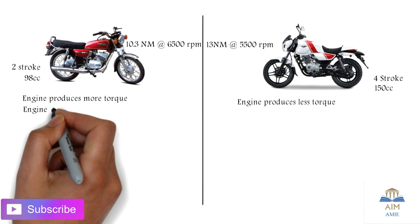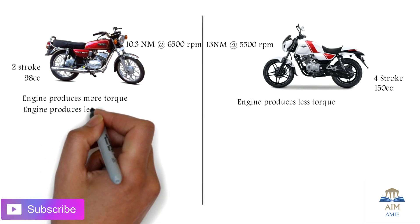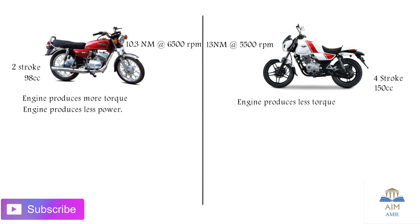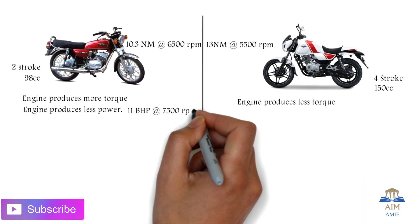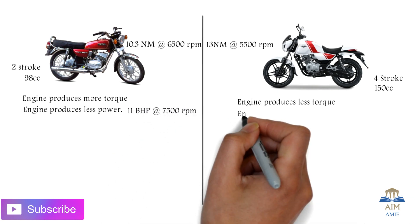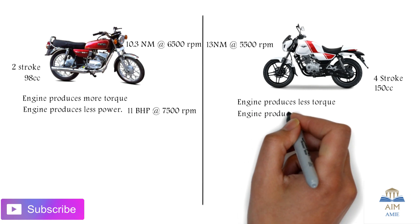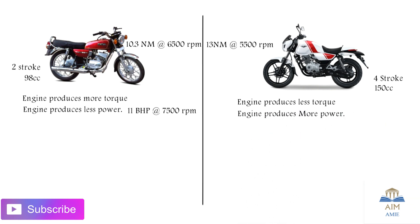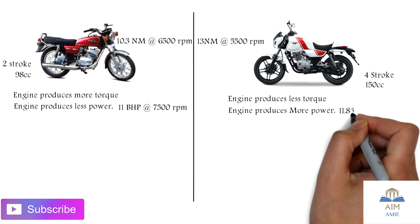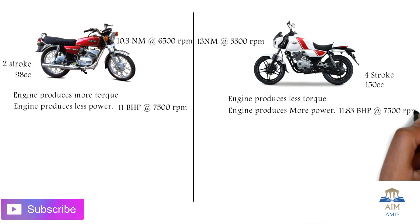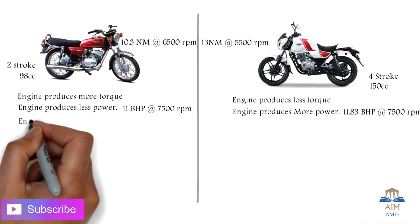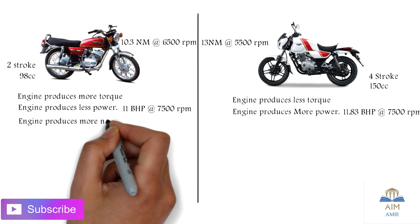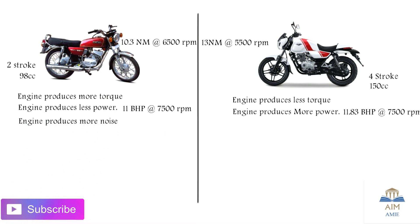The two-stroke engine produces more power, which is 11.1 BHP at 7500 RPM. In the case of the four-stroke engine, it produces 11.83 BHP, which is comparatively less for the 98CC segment.